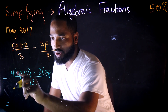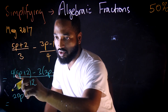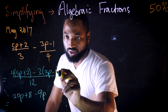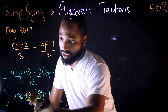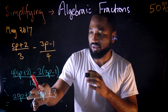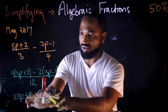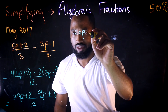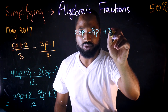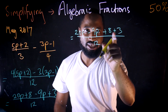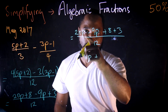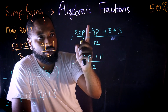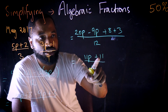Now we multiply: 4 by 5p gives 20p, 4 by 2 gives 8; negative 3 by 3p gives negative 9p, and negative 3 by negative 1 gives plus 3. Keep that all over 12. Grouping like terms: 20p take away 9p is 11p, and 8 plus 3 is 11, so we get 11p plus 11 over 12.